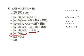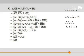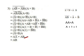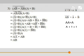Therefore we get A complement B into A, which simplifies to A into A complement plus AB. Since A into A complement equals 0, the final result is AB.